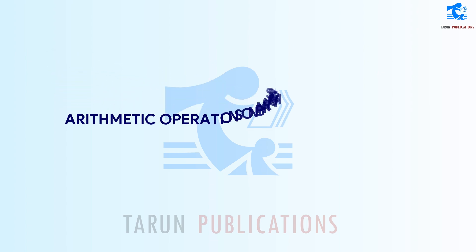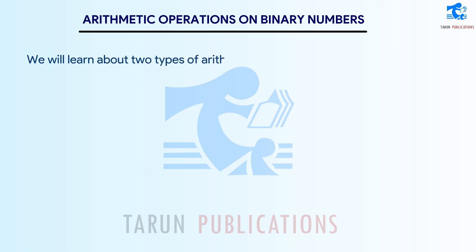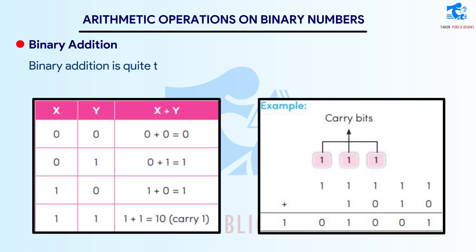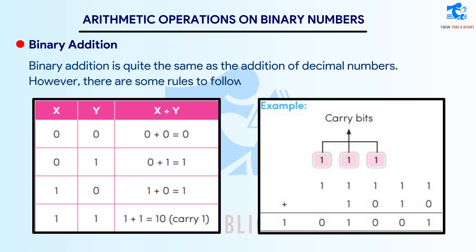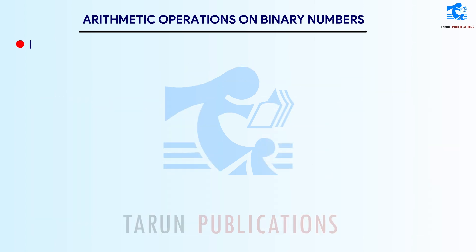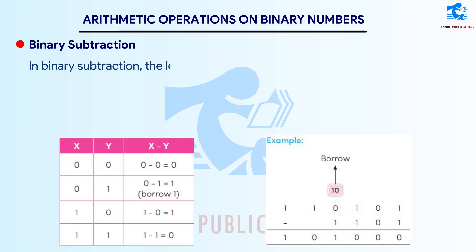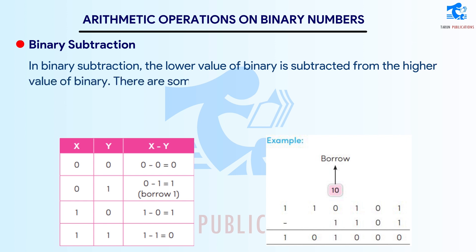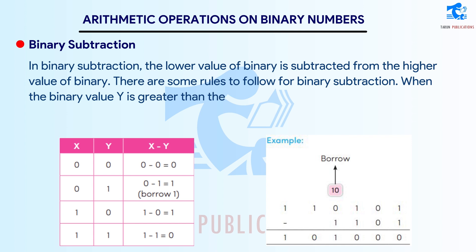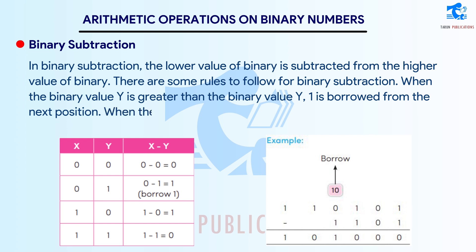Arithmetic operations on binary numbers. We will learn about two types of arithmetic operations on binary numbers. Binary addition is quite the same as the addition of decimal numbers; however, there are some rules to follow while adding binary numbers. In binary subtraction, the lower value of binary is subtracted from the higher value of binary. There are some rules to follow: when the binary value X is greater than the binary value Y, 1 is borrowed from the next position. When the binary digit 0 borrows 1 from the next MSD, it becomes 10.